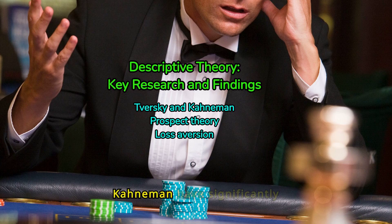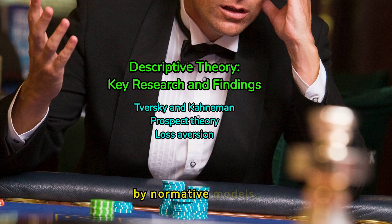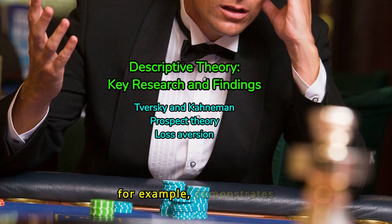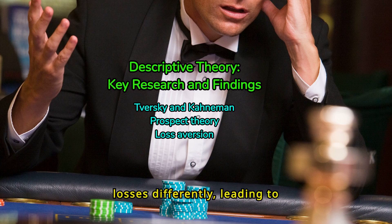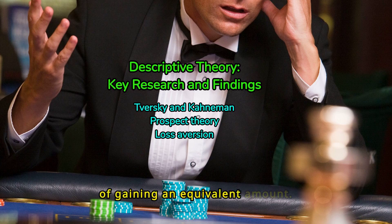Researchers like Tversky and Kahneman have significantly advanced our understanding of descriptive decision-making. Their work shows that people often deviate from the optimal decisions predicted by normative models, influenced by inherent biases and the context of their decision-making environment. Kahneman and Tversky's development of prospect theory demonstrates how people value gains and losses differently, leading to decisions that deviate from expected utility theory. Prospect theory explains phenomena such as loss aversion, where the pain of losing is more intense than the pleasure of gaining an equivalent amount.